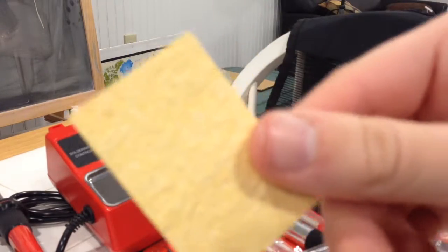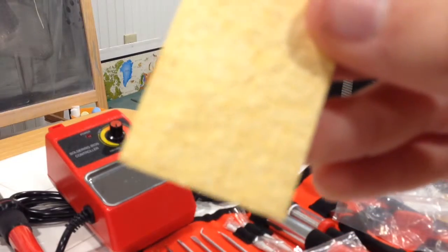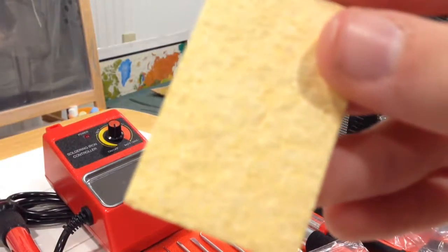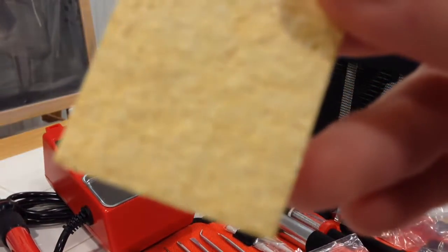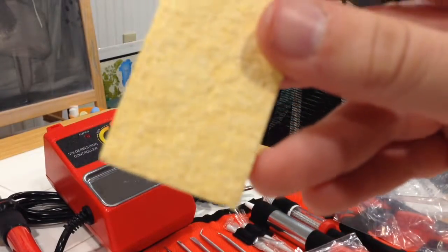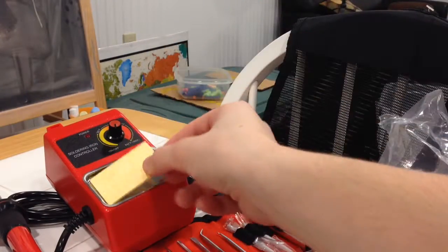Which is then placed right here. So well, this is a little sponge for soldering. Let's put it right here.